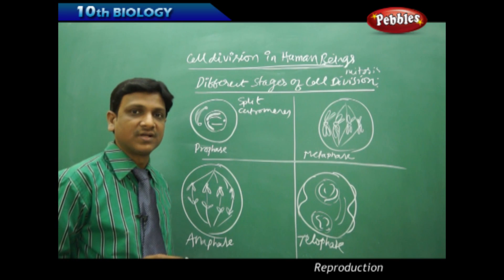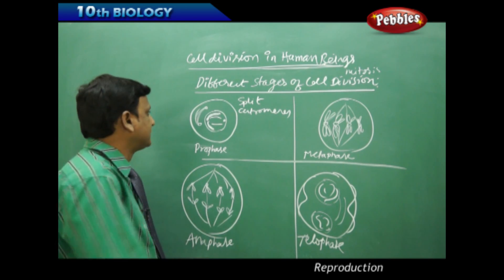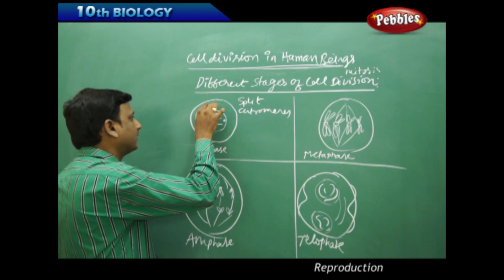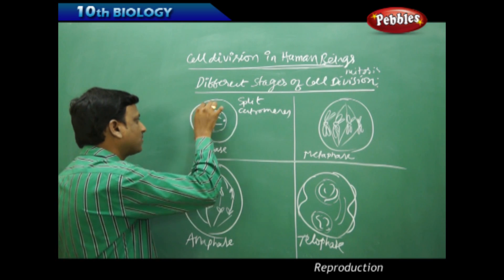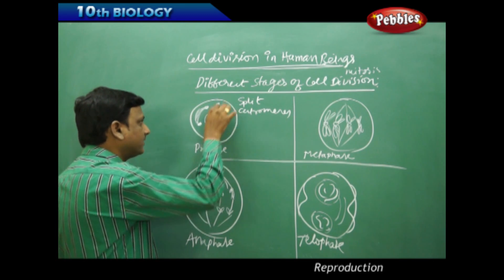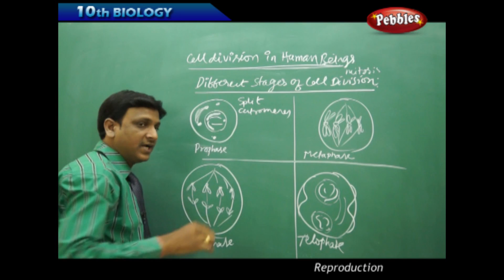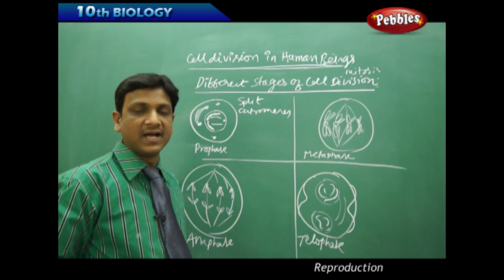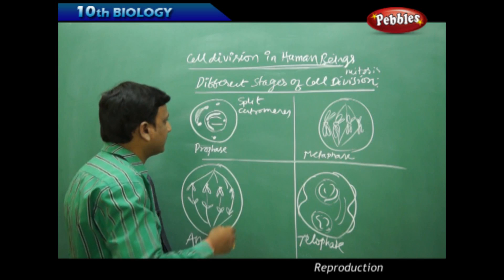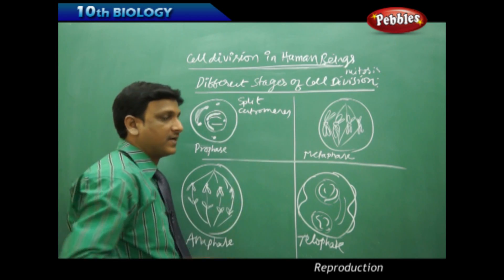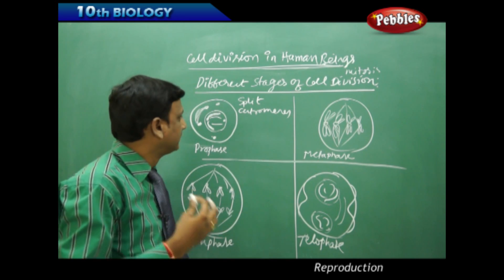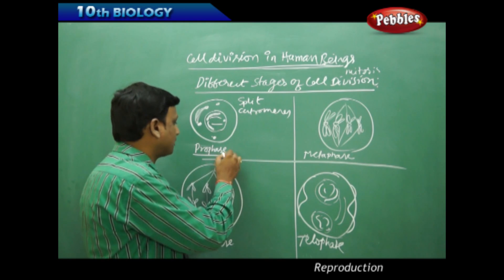The centrosome containing rod-like centrioles starts dividing and going in two opposite directions, producing spindle fibers which will be connected to the centromeres of the chromatids for the process of division. These are the changes observed in prophase.